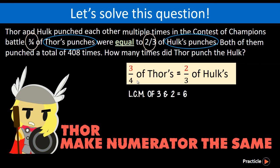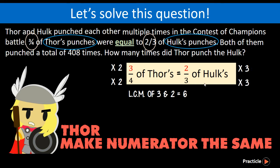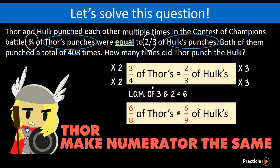Looking at 3 quarters first — to turn 3 into 6, we multiply both top and bottom by 2, giving us 6 eighths. On Hork's side, to make 2 into 6, we multiply both top and bottom by 3, giving us 6 ninths. Now we have 6 over 8 of Thor's punches equals 6 over 9 of Hork's punches — the numerators are the same! Pro tip: to check if you've done the conversion correctly, simply reduce the fractions to simplest form and you should get back the original fractions.